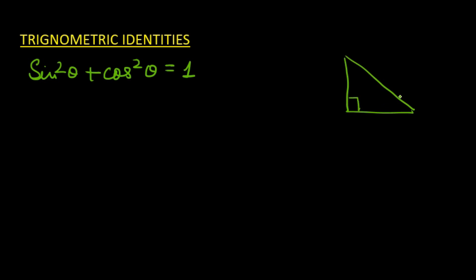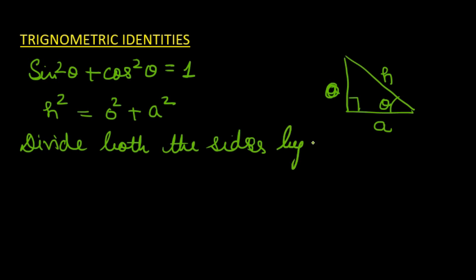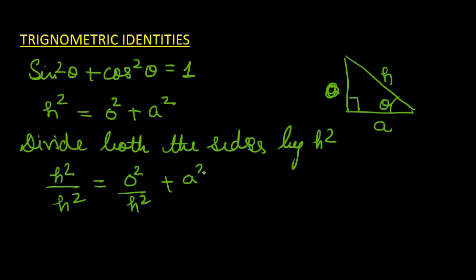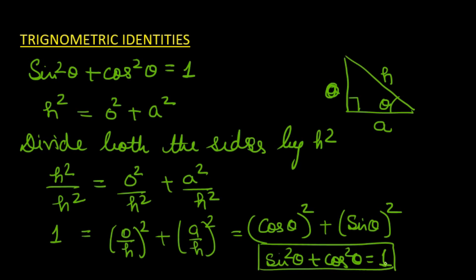So we have a right angle triangle. This angle is theta. This is opposite, adjacent, and the hypotenuse. According to Pythagoras theorem, h² = O² + A². Now if we divide both sides by h², we get h²/h² = O²/h² + A²/h², which is 1. This can be written as (O/h)² + (A/h)² = 1, which gives us sin²θ + cos²θ = 1. This is our first trigonometric identity.